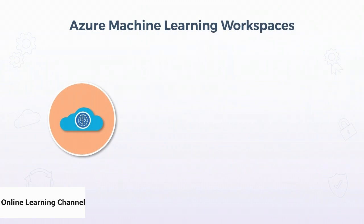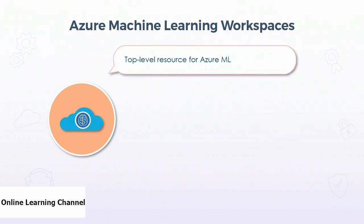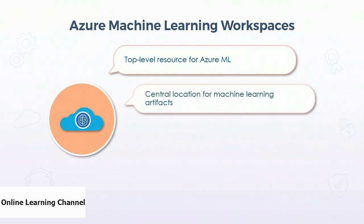In Azure, custom machine learning implementations require an Azure Machine Learning workspace resource to be set up and configured. The Azure ML workspace is a top-level resource for any machine learning work. Specifically, the Azure ML workspace resource is a central location for machine learning artifacts — so if you're building models, defining experiments, storing run metrics, or even creating notebooks, all of that is managed and maintained within the ML workspace resource.